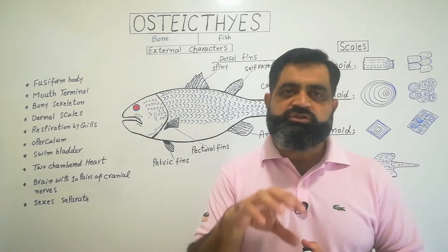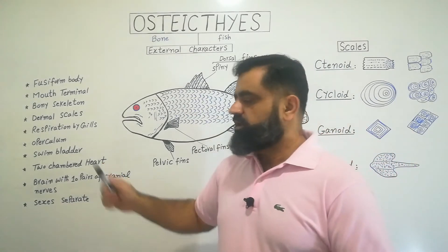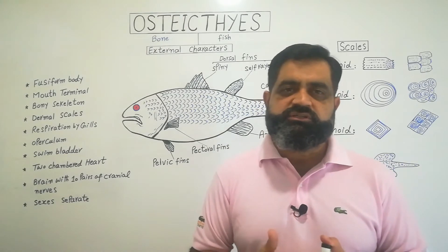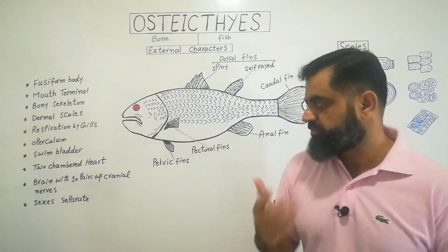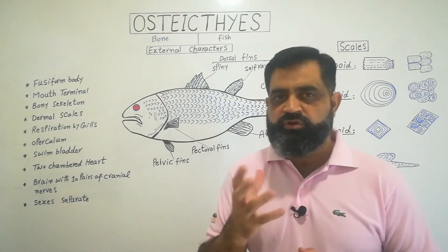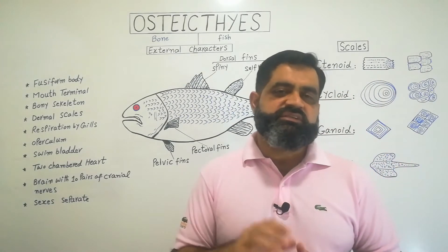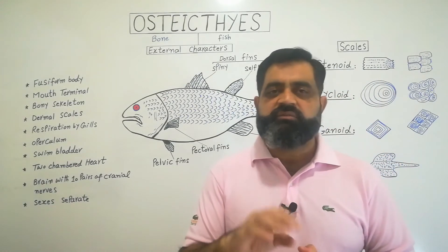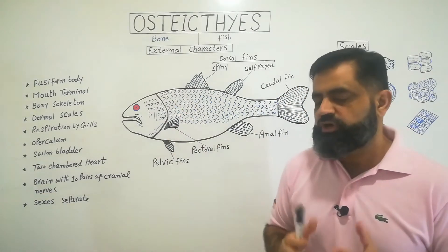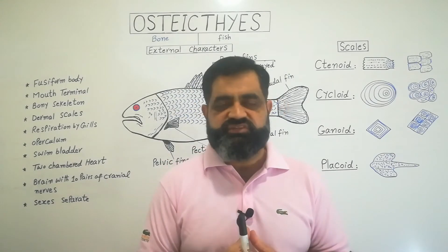These fishes have a two-chambered heart — one atrium and one ventricle. They have a brain with ten pairs of cranial nerves, which is an important characteristic of this class. They also have separate sexes, meaning male and female are separate. These are the general characteristics of class Osteichthyes.